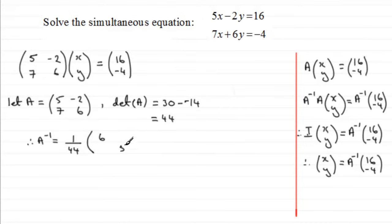And then what we did was we switch these two elements around, so 6 goes there, 5 goes there. And we change the sign of these two elements, so that's minus 7, and then changing the sign on the minus 2 just gives us the 2. So there's our inverse matrix. We could write this as 6/44, 2/44, -7/44, and 5/44. It's up to you, but I'm just going to leave it like this. I find it easier for problems like this.